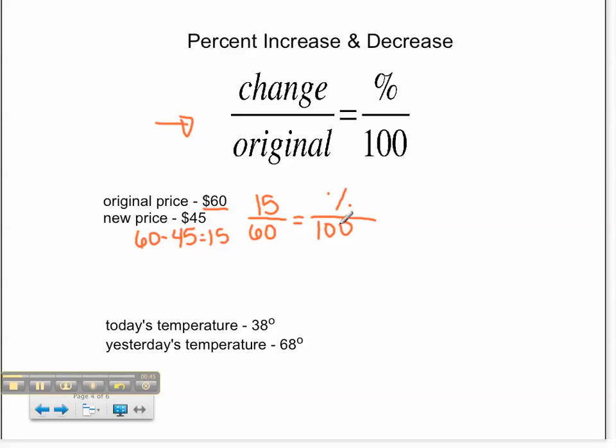We can now simply solve this by cross-multiplying. 15 times 100 is equal to 1500. 1500 divided by 60 is equal to 25, therefore the percent change is 25%. Since the price went down, it is a decrease.